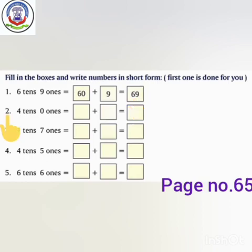Number 2 — how many 10s do we have? We have 4 tens. How many 1s do we have? We have 0 ones. We put 0 after 4 and it becomes 40. 40 plus 0 equals 40.